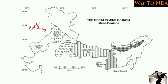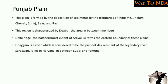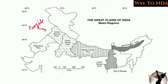The Punjab Plain is drained by five to six important rivers — the Indus and its five tributaries: Jhelum, Chenab, Ravi, Beas, and Satlaj. When we talk about the Indian Punjab specifically, Yamuna and Satlaj drain in this area, which is why the Punjab Plain is also called as the Satlaj-Yamuna Plain.